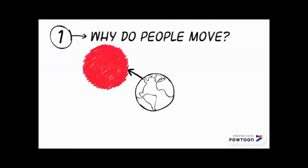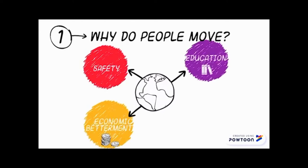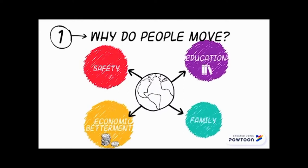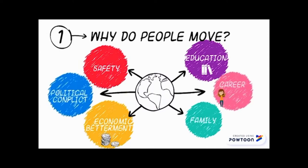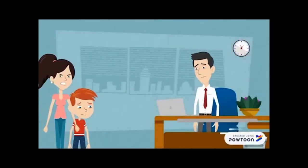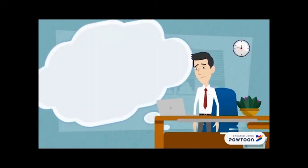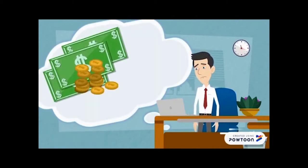But why do people move? People migrate because they think about their safety, economic betterment, education, family, political conflict, and career. These are the push factors that are considered to be the cause of why people migrate. You can think of it like this: you are no longer having time with your family and your relationship with them has become toxic.